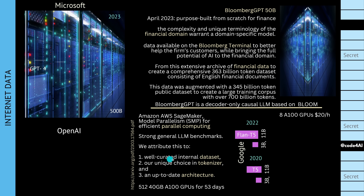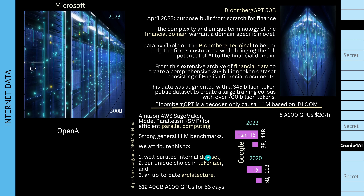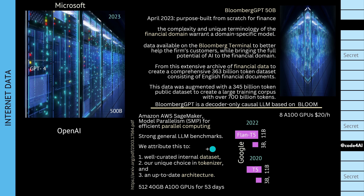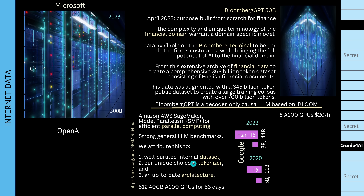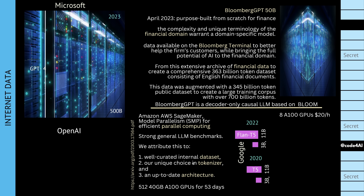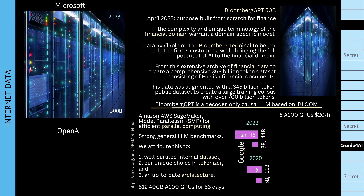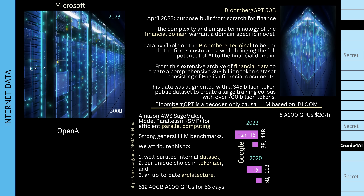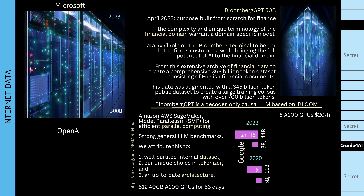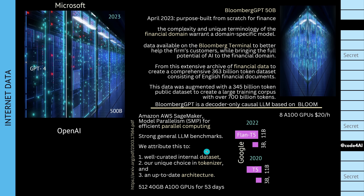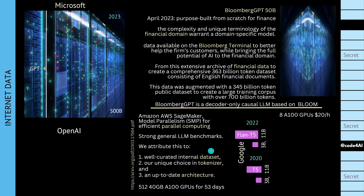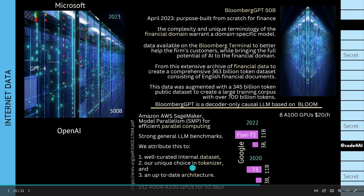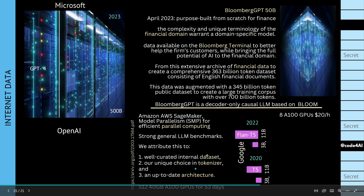Second, they had a unique tokenizer choice. Rather than byte pair encoding or sentence-based encoding, they chose a unigram tokenizer because of the financial data — which is really clever, with an Ivy League university in the background. Third, they chose a specific LLM architecture: the Bloom architecture. We can learn so much from these decisions.